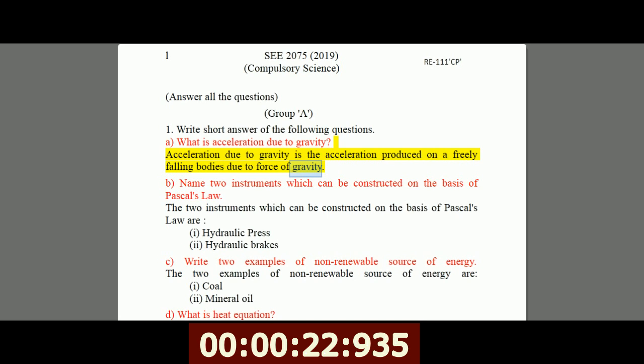B, name two instruments which can be constructed on the basis of Pascal's law. The two instruments which can be constructed on the basis of Pascal's law are: I, hydraulic press, II, hydraulic brakes.